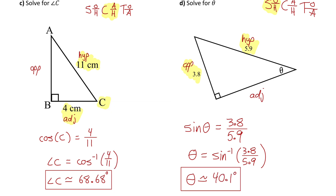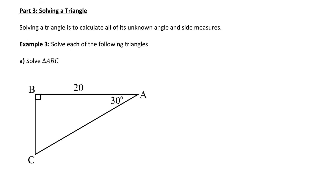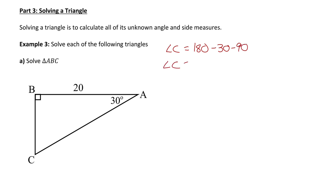Now that you have a good understanding of how to use inverse trig functions to solve for angles, let's do one last question where we solve for an entire triangle — calculating all unknown angles and side measures. In example 3A, solve triangle ABC. We're missing two side lengths and one angle. The easiest place to start is solving for the missing angle. Since the sum of all angles in a triangle is 180, angle C equals 180 minus 30 minus 90, so angle C equals 60 degrees.